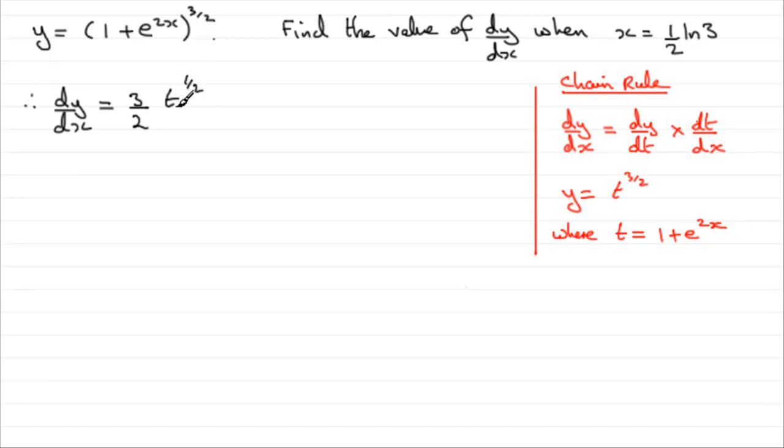I'm not going to write that t there. I'd remember that t was (1 + e^(2x)), so I would write (1 + e^(2x))^(1/2). So that part is dy/dt.